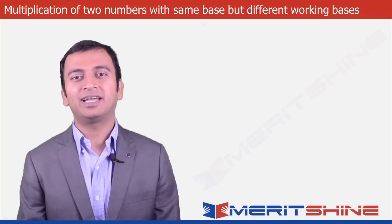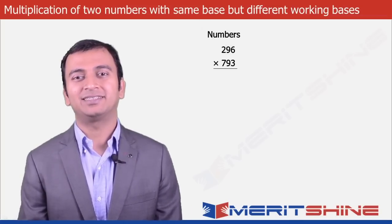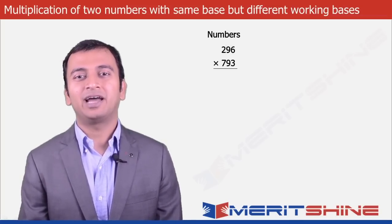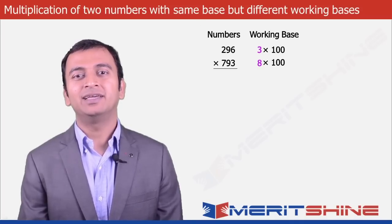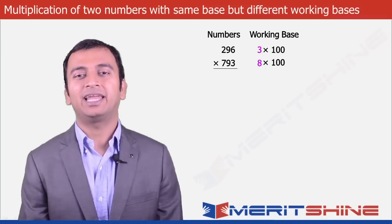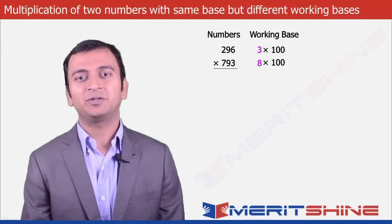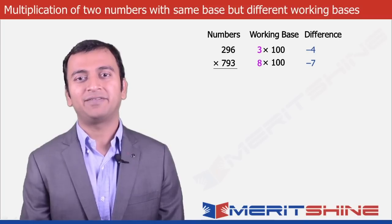Let us now try 296 x 793 as an example. Here our working bases would be 300 and 800 respectively — 3 the multiplier for the first and 8 the multiplier for the second — and our differences would be minus 4 and minus 7.